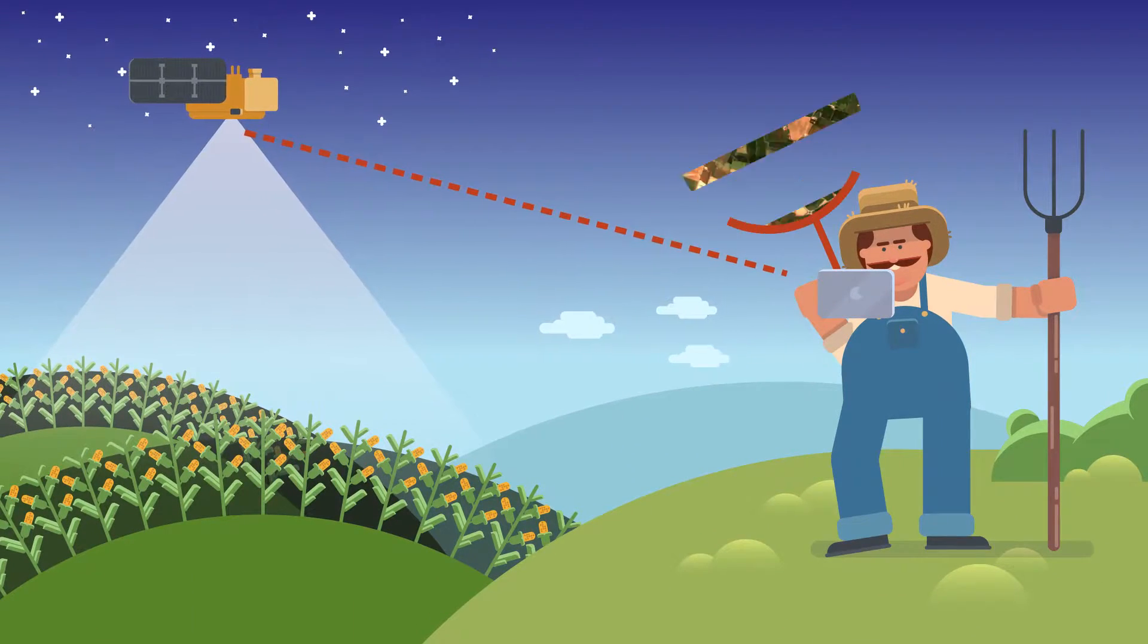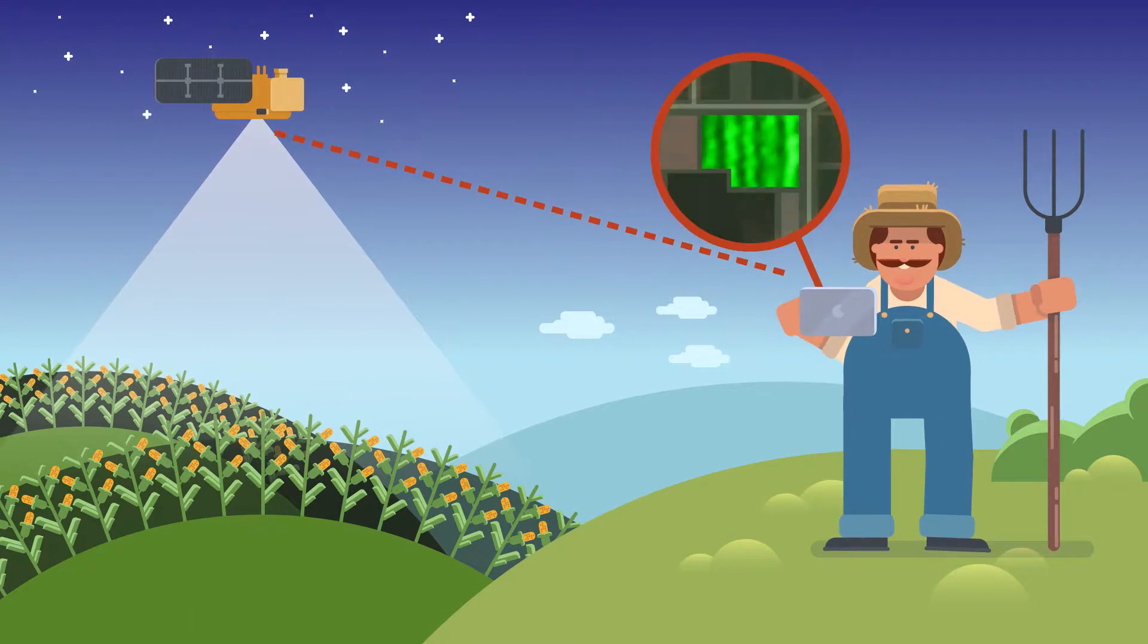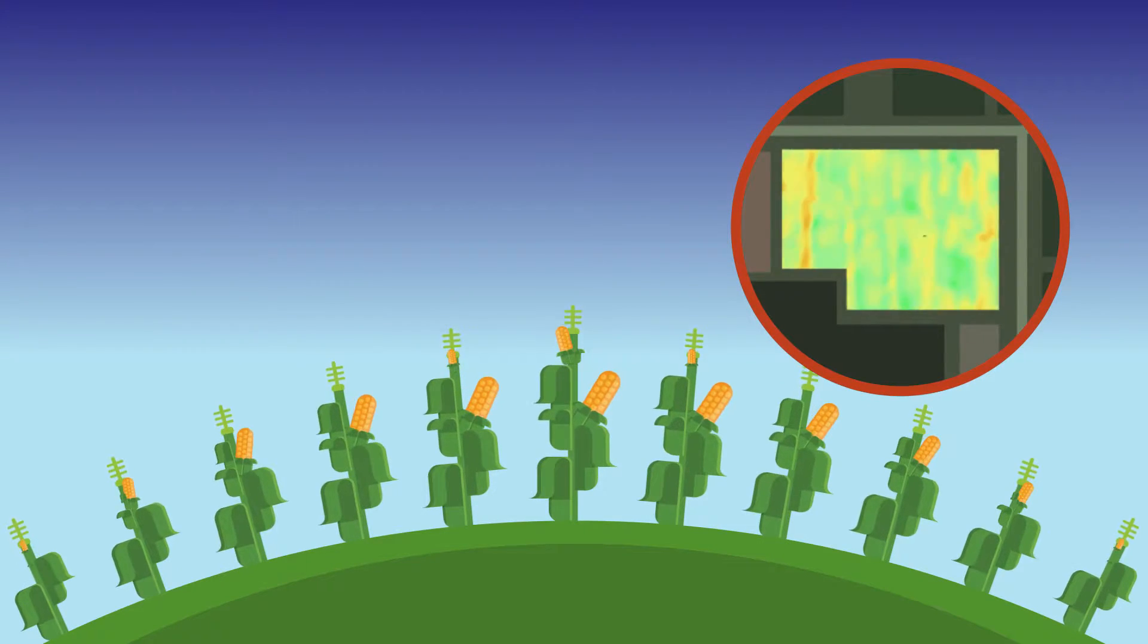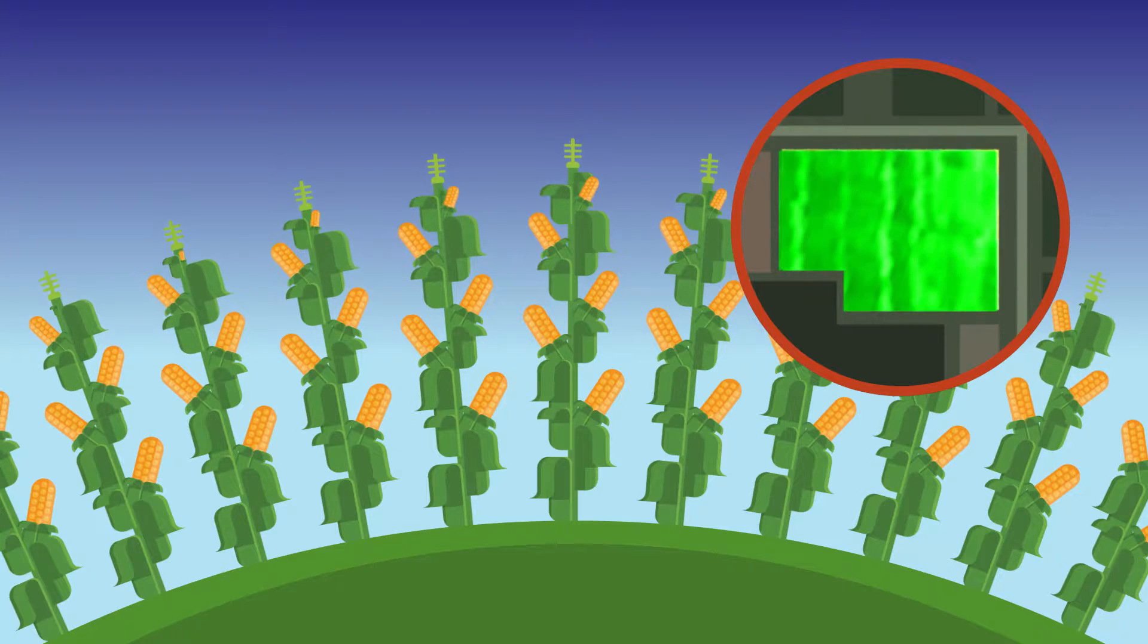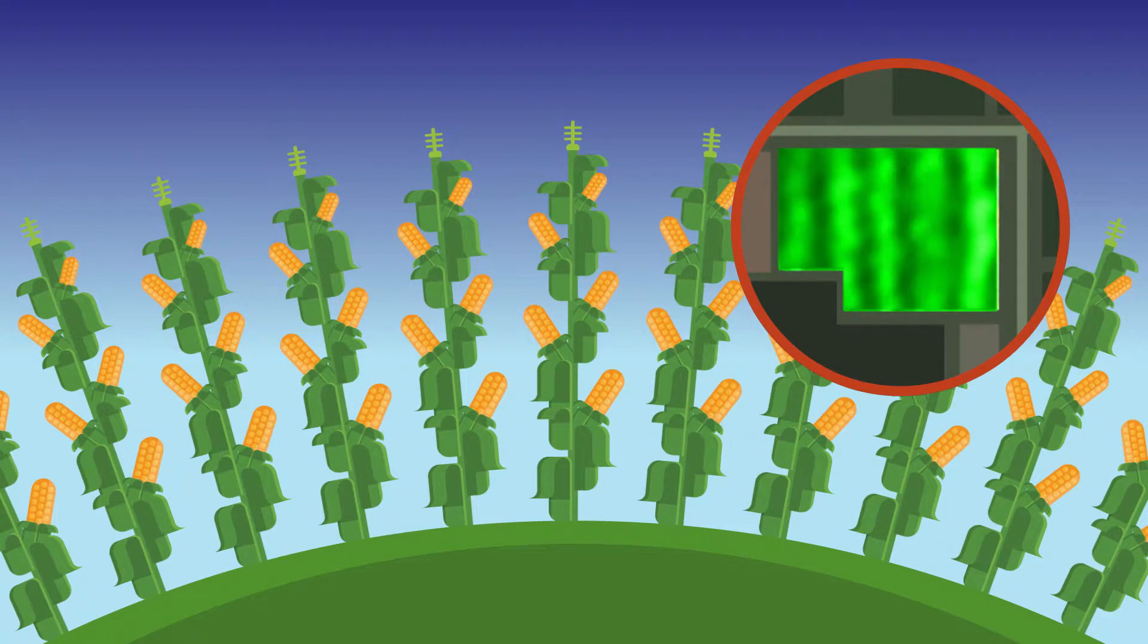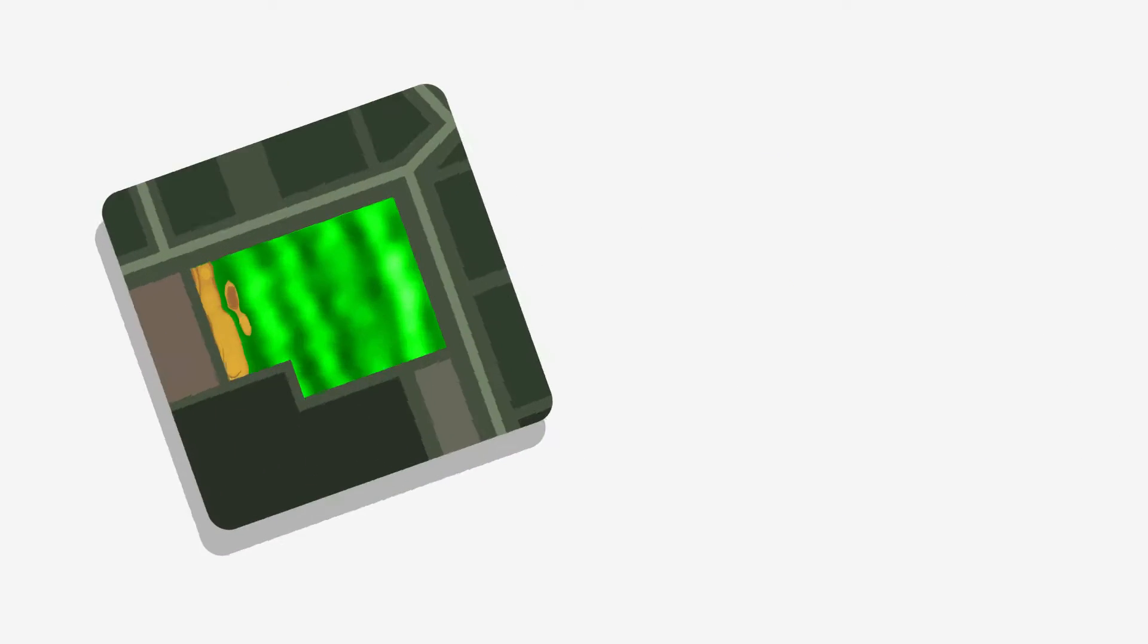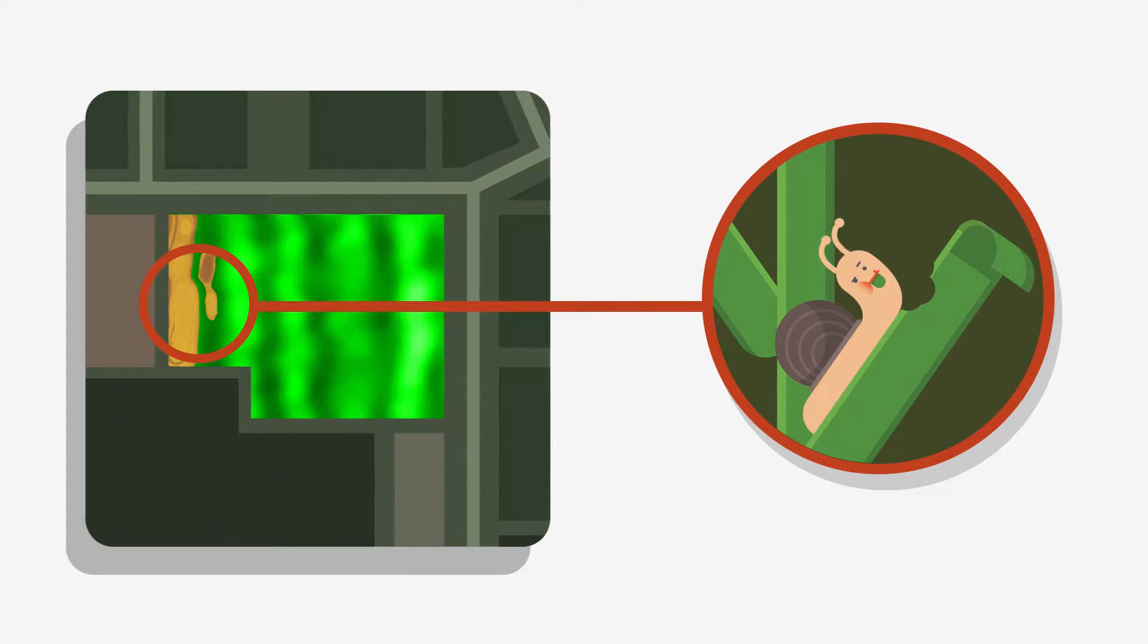High-resolution satellite imagery delivers valuable insights into farmers' fields. Thanks to these images, your farm management systems can help farmers monitor crop development, compare different fields and seasons, and identify crop damage at an early stage.